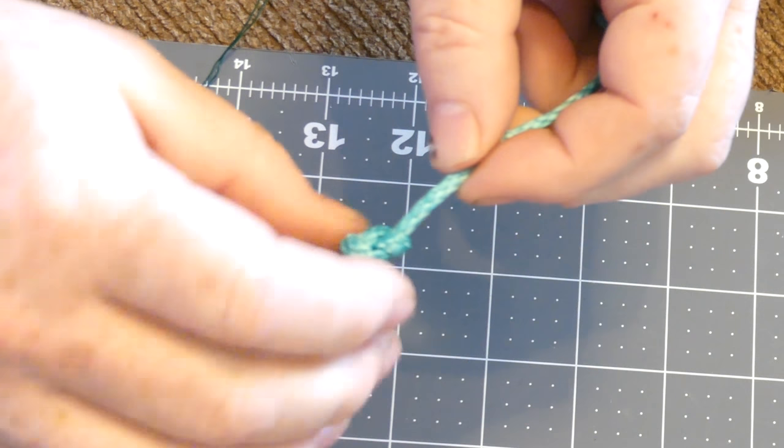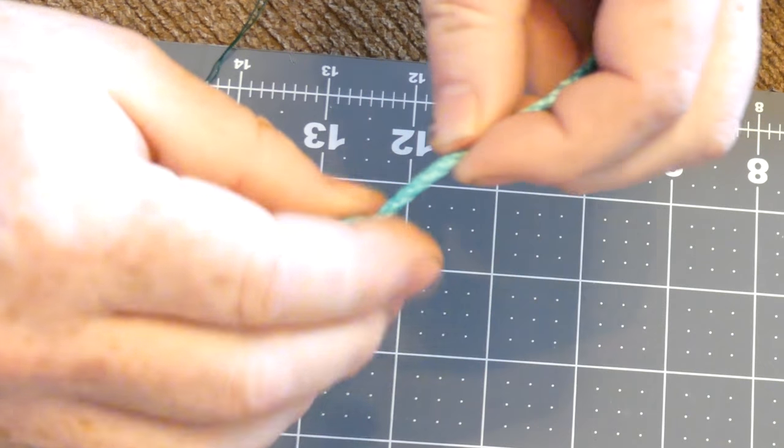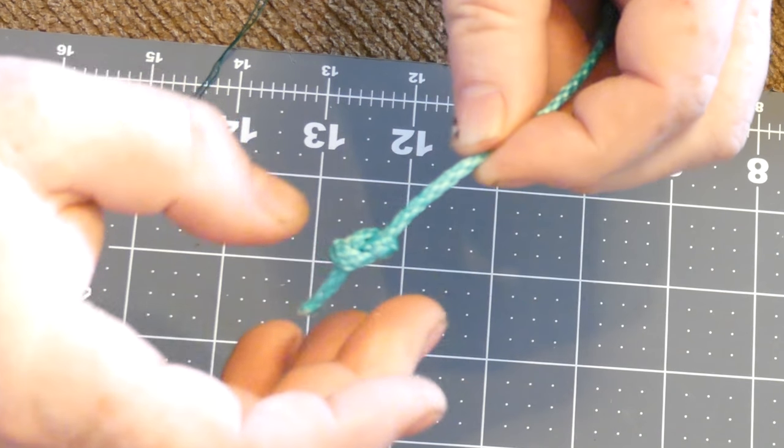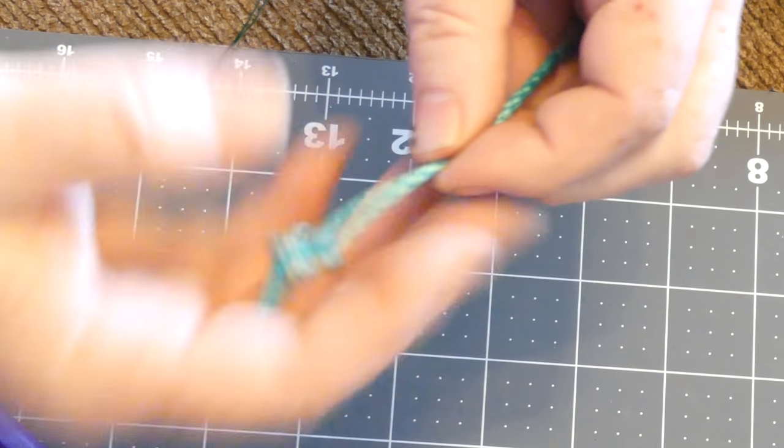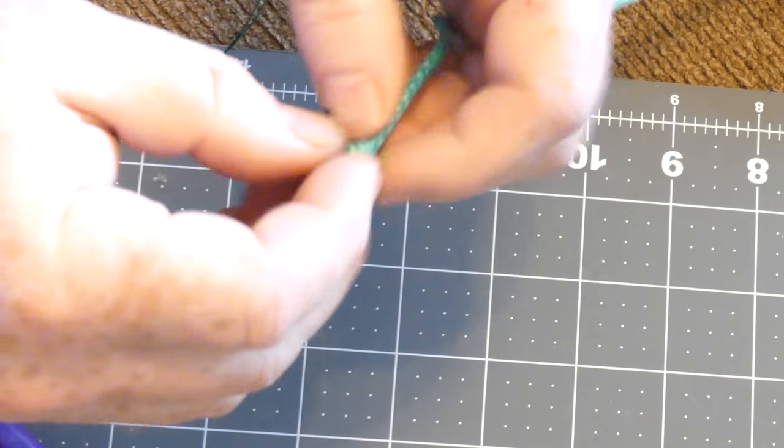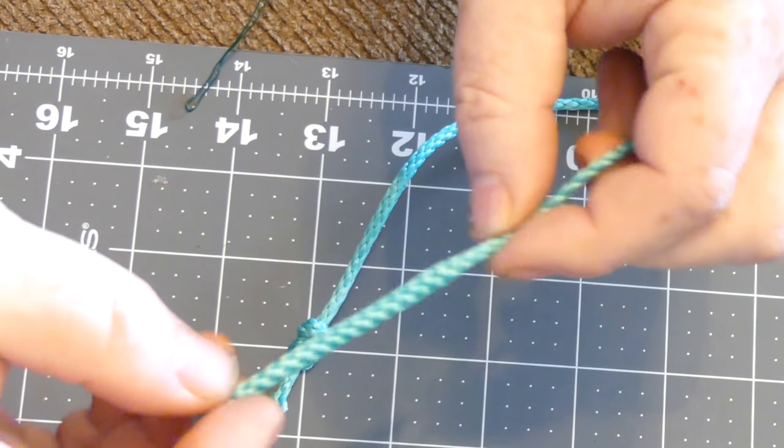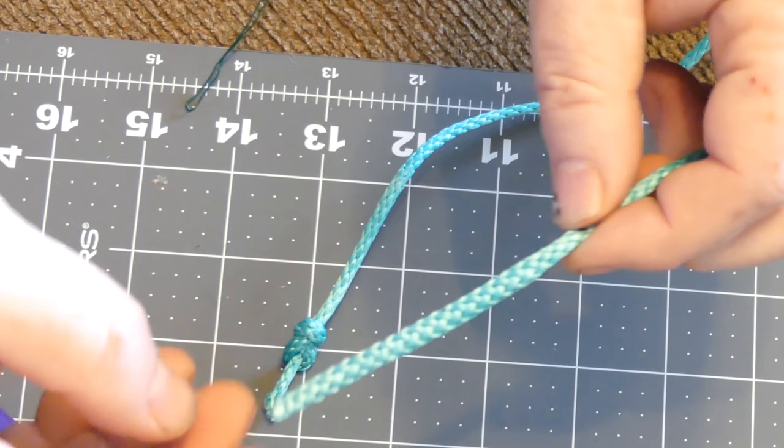And for whoopee slings, actually a knot works really well. That's why a lot of people do this end berry, to have some way to grab onto it and some way to keep the end from going back through your whoopee sling.